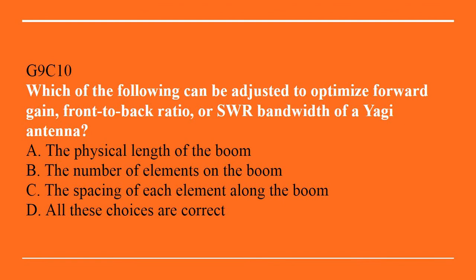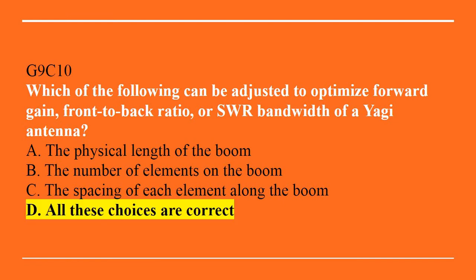G9C10: Which of the following can be adjusted to optimize forward gain, front-to-back ratio, or SWR bandwidth of a Yagi antenna? A. The physical length of the boom. B. The number of elements on the boom. C. The spacing of each element along the boom. Or D. All of these choices are correct. The correct answer is D, all of these choices are correct.